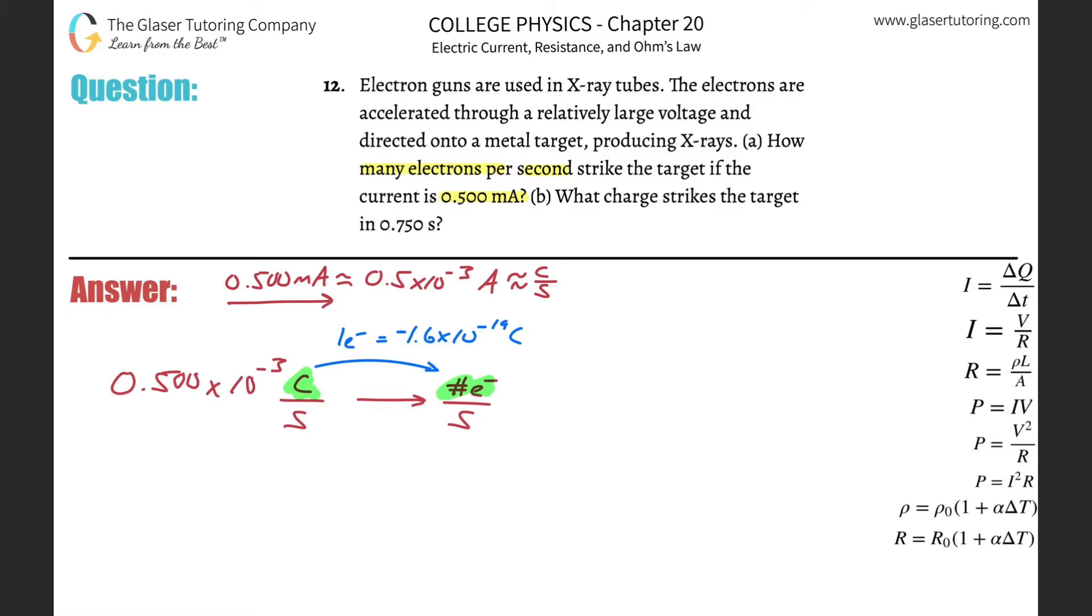So how do we set this up? 0.500 times 10 to the minus 3 coulombs per second. I want to get rid of my coulombs so they go on the bottom. I want to solve for number of electrons so they go on the top. And I know the relationship that for every one single electron there will be 1.6 times 10 to the minus 19 units, negative 19 units of charge for that electron.